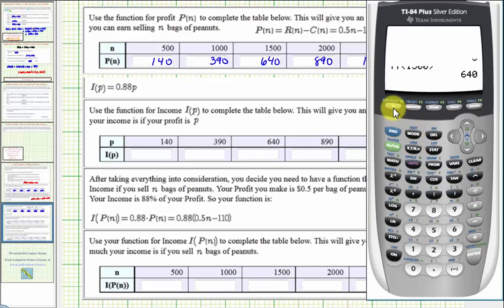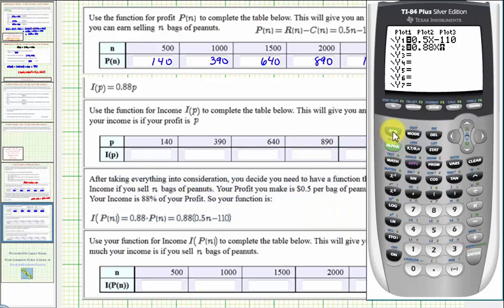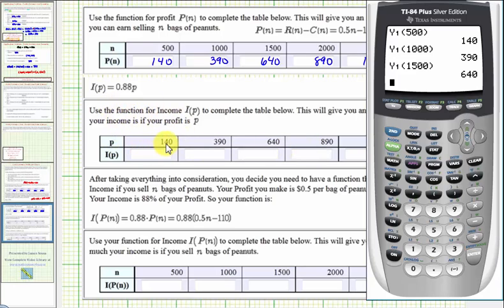So now we're going to calculate the actual income, given you have to pay 12% of your profit. This table is the same table from the previous slide, and now we'll calculate the income, or I of P, which equals 0.88 times these profits. Notice how these profits now become the inputs into our income function. Again, we'll find these function values using the graphing calculator. We'll press Y equals again, press enter down to Y2. Our new function is 0.88 P, so we'll enter 0.88 X.